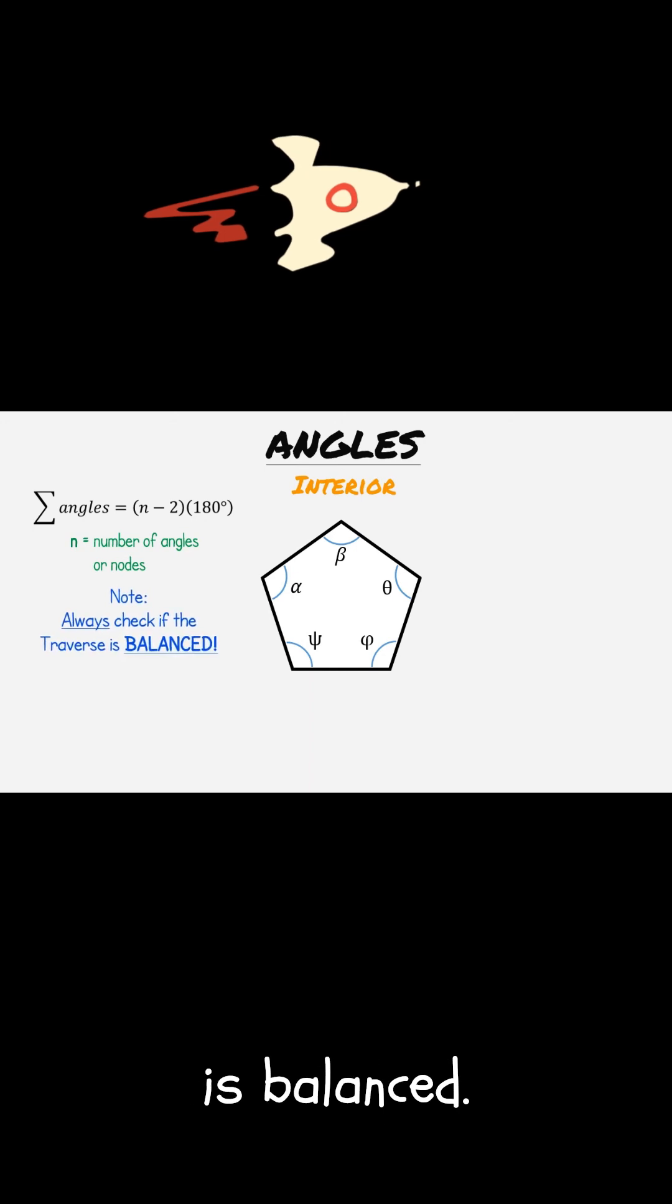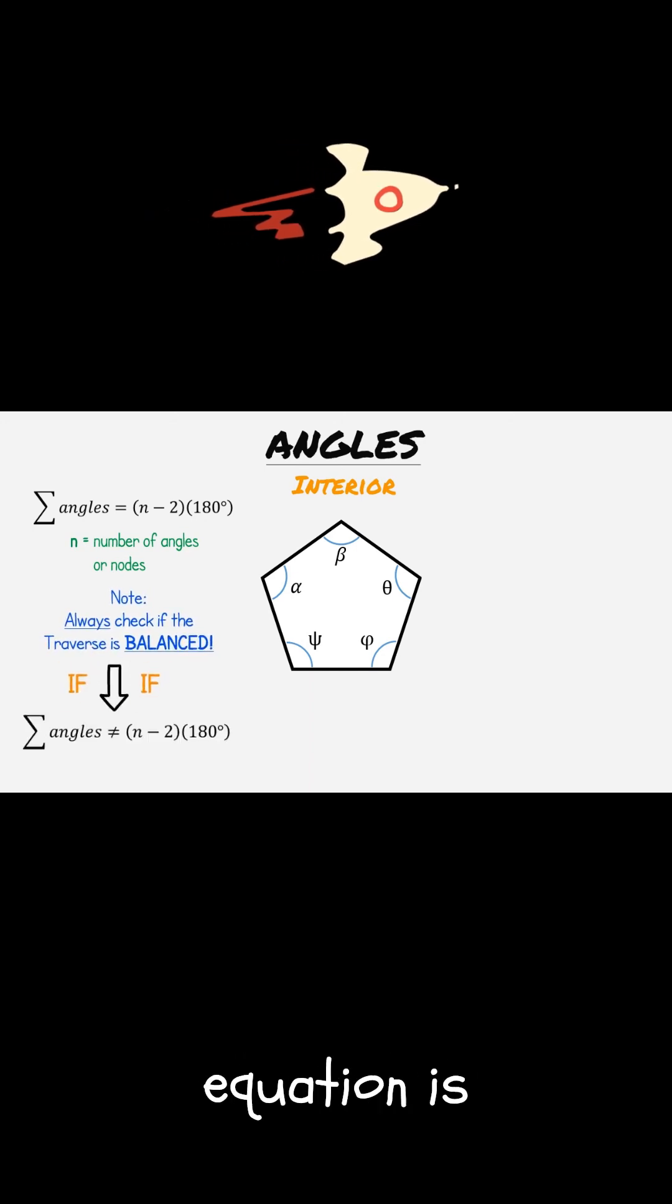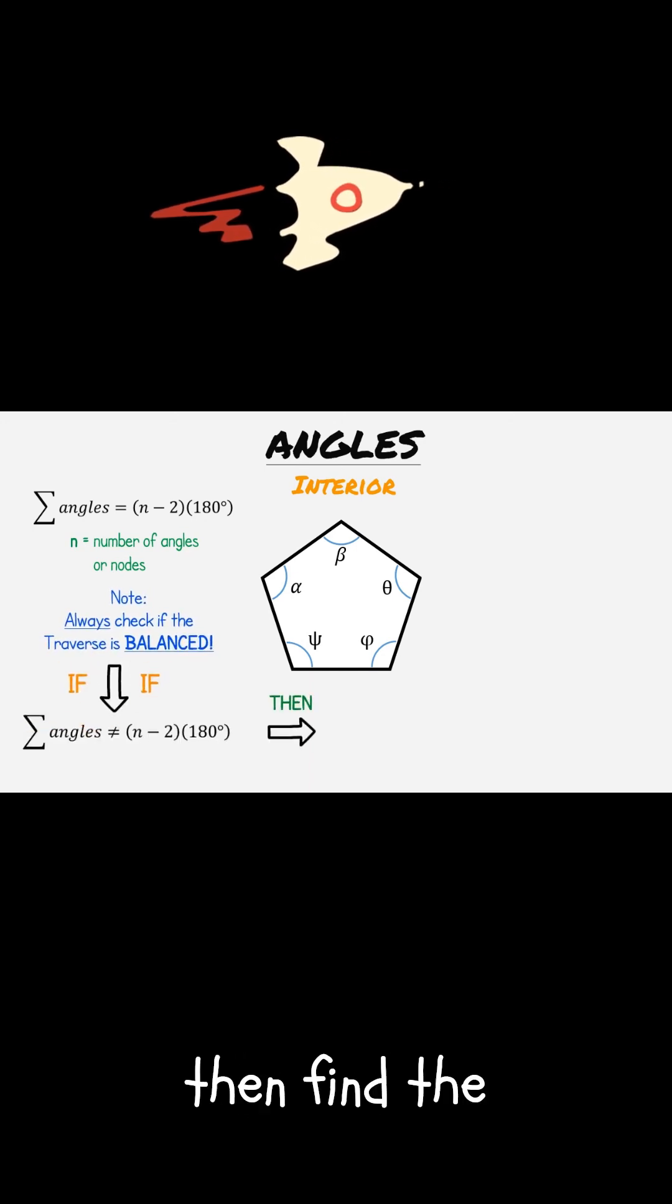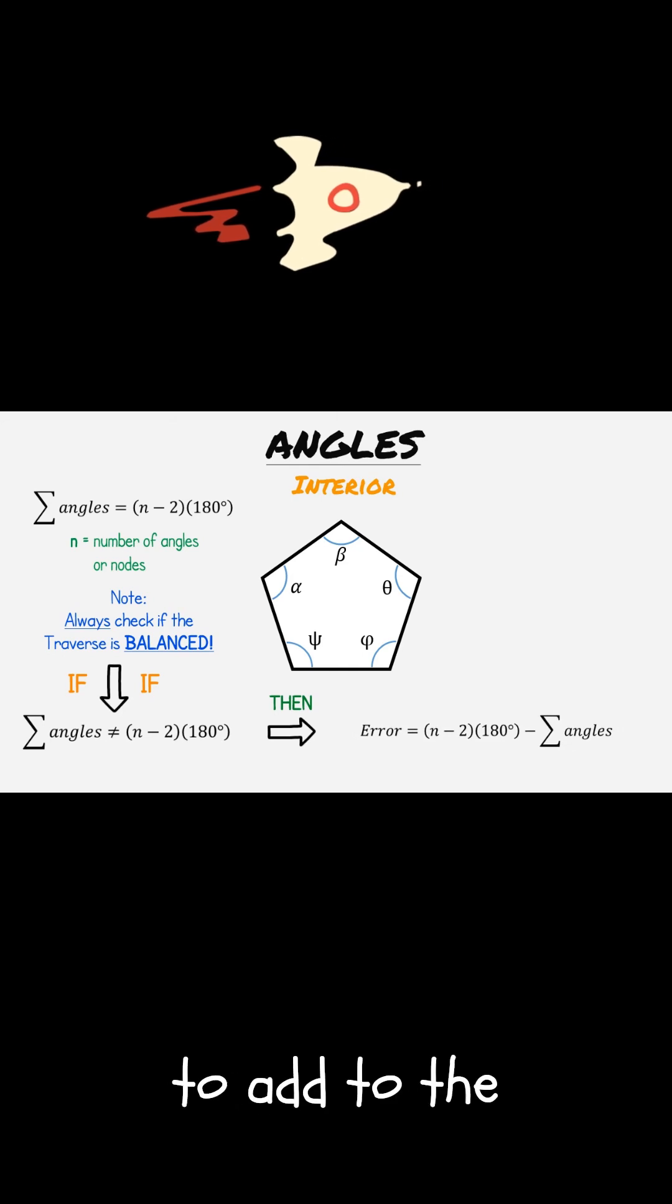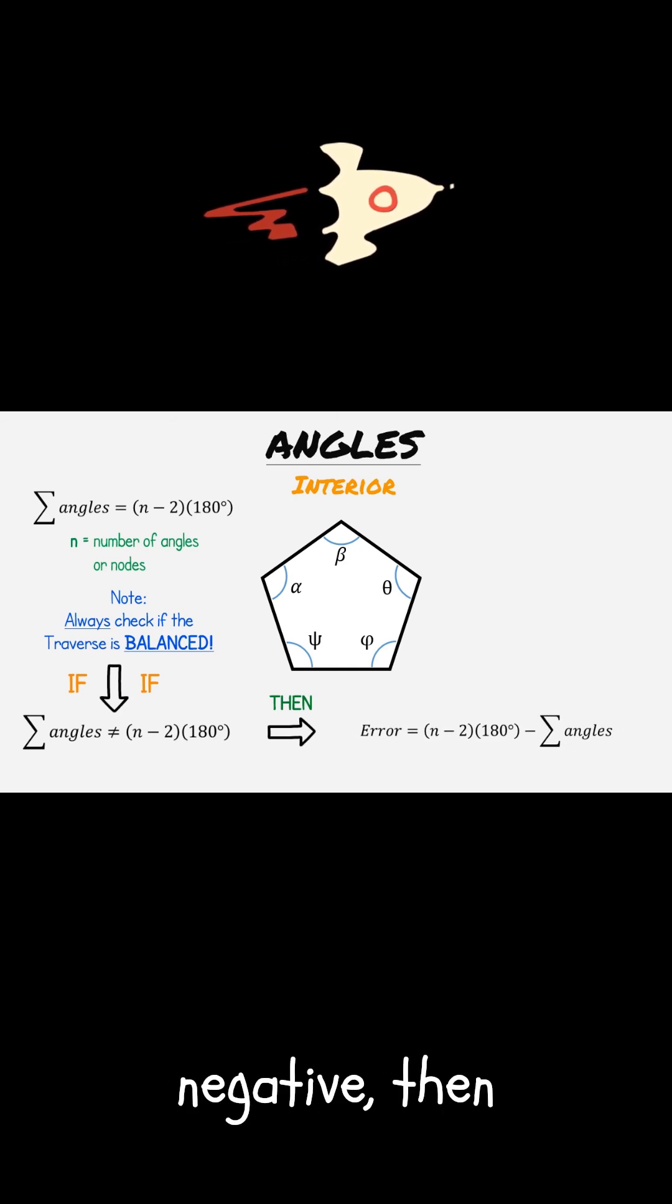Check if the given polygon is balanced. If our first equation is not true, then find the total error. If the result using this equation is positive, then you need to add to the total degrees. If it's negative, then subtract.